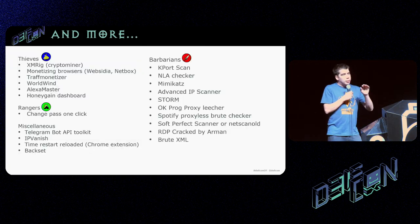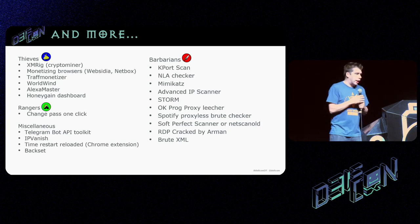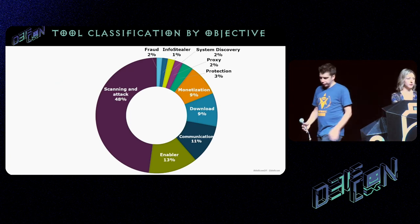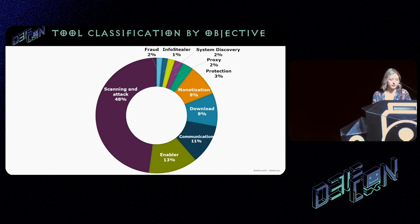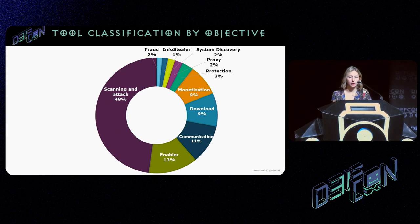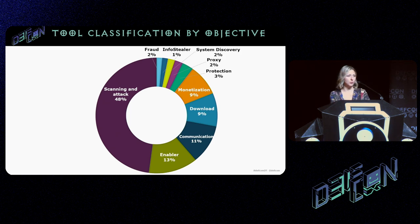There is a lot more tooling and our aim is to document it via our blog and share hashes and Sigma rules for detection. If we classify the tools we've seen by objective: a lot of scanning and attack tools, then enabler tools, monetization, download, and communication — primarily Telegram, which they use to communicate but also to transfer files.